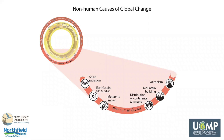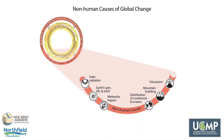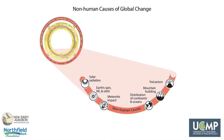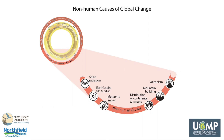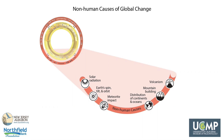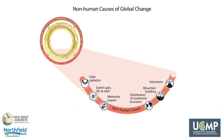Some of the non-human causes of change, such as variation in Earth's spin, tilt, and orbit, or changes in the distribution of continents and oceans, cause changes on timescales of tens of thousands to millions of years and do not explain the rapid global changes we are observing today. Events that cause rapid change, such as meteorite impacts or major volcanic eruptions, are rare, but when they do happen, they can have catastrophic consequences throughout the Earth's system.